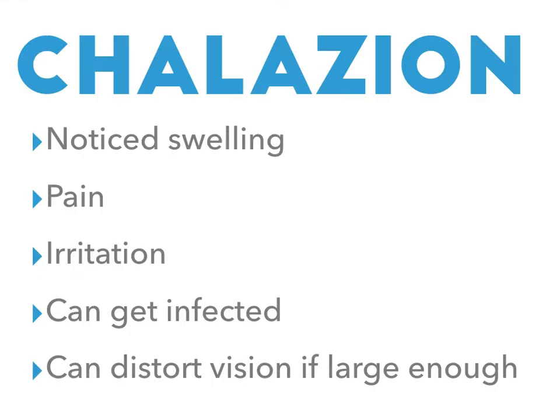What are the key features of history in chalazion? The features of history you might see are that the patient has noticed a swelling. It's painful and irritative, it can get infected, and it can distort vision if it gets large enough.